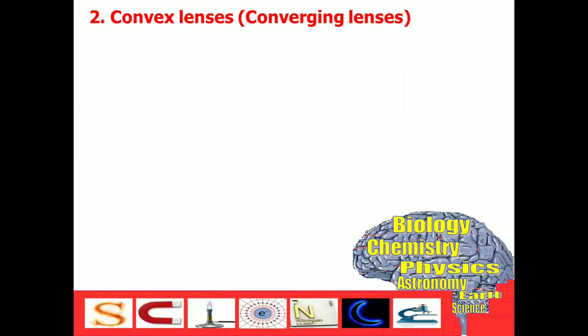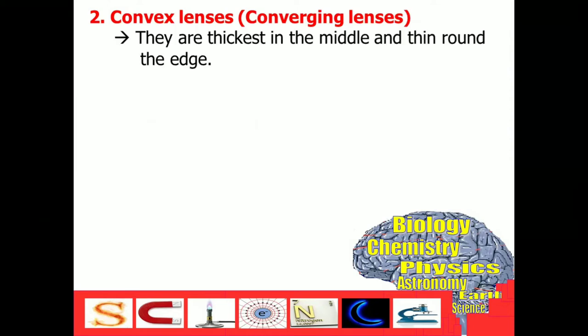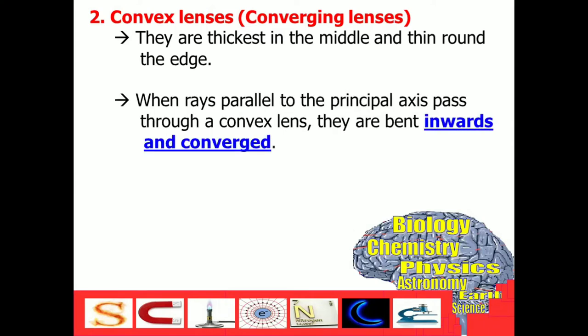How about the second type? We call it convex lenses, or it is also known as converging lenses. They are thickest in the middle and thin around the edge. When light rays parallel to the principal axis pass through a convex lens, they are bent inwards, and so it causes convergence.